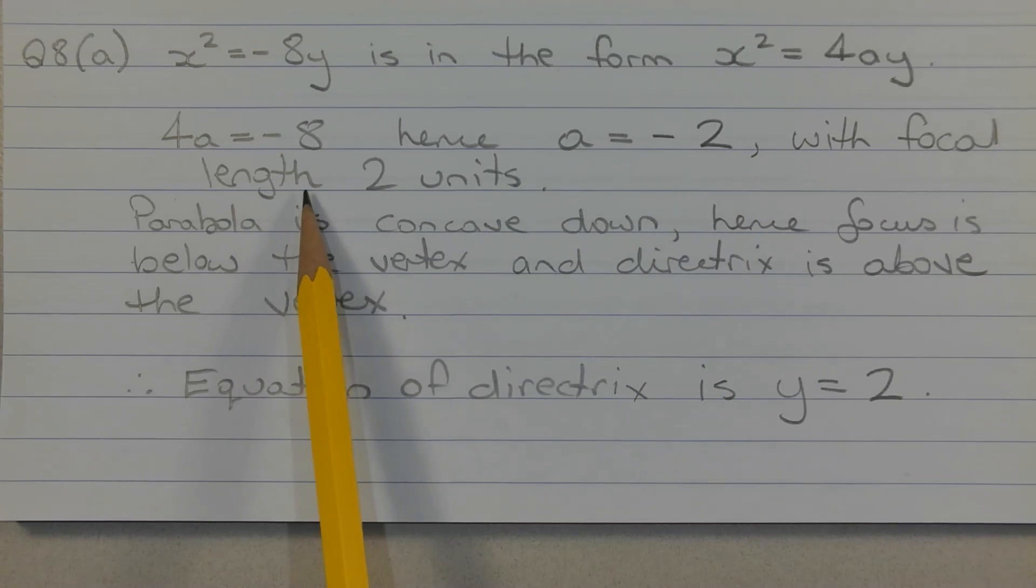This implies that the focal length is 2 units. Now the focal length is the distance between the vertex and the focus, and the vertex and the directrix.